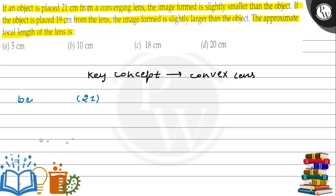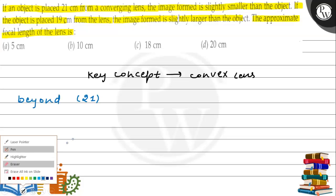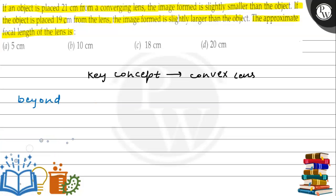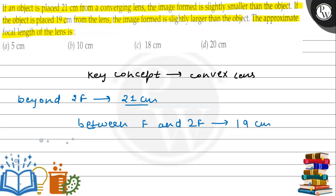So this distance of 21 centimeter is beyond 2F. Now we have an object at 19 centimeter and the image is larger. We know that the image is larger when objects are placed between F and 2F. So 19 centimeter is between F and 2F, and 21 centimeter is beyond 2F.